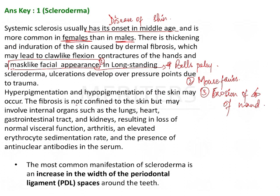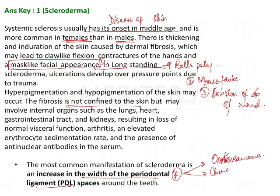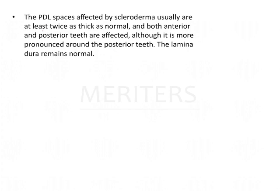Hypopigmentation and hyperpigmentation may occur. Fibrosis is not confined to the skin but may involve internal organs. The most common oral manifestation of scleroderma is an increase in the width of the periodontal ligament spaces. This increase in PDL width is also seen in osteosarcoma and chondrosarcoma, where it is at least twice as thick as normal.